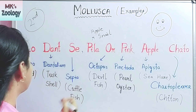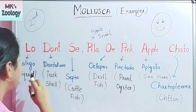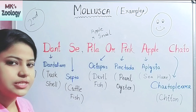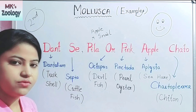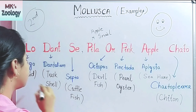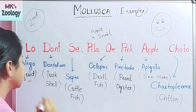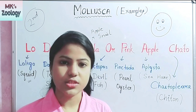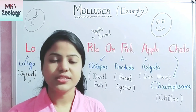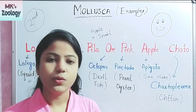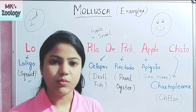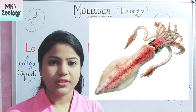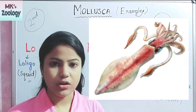"Lo" stands for Lolligo. Lolligo is a species of phylum Mollusca, also known as squid. You can see the diagram of Lolligo on screen — this is your Lolligo.